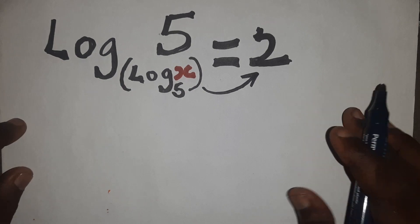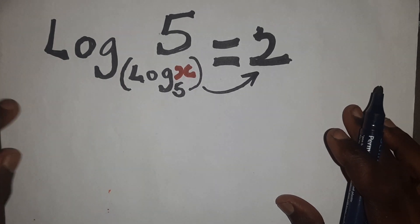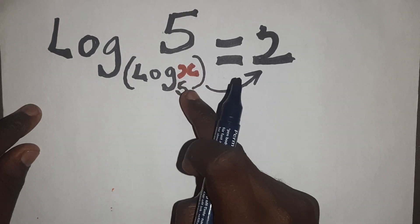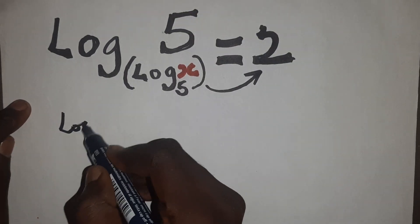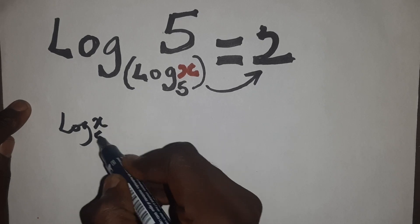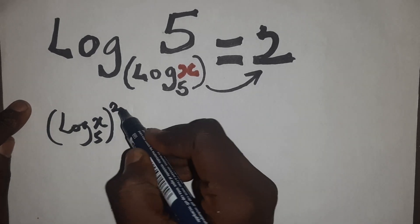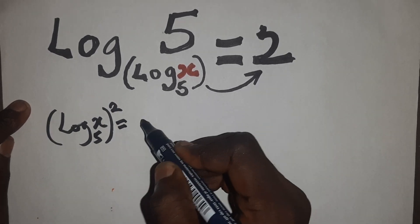So we are writing that one out, comparing it to the initial equation. So log x base 5 raised to the power of 2 equals 5.